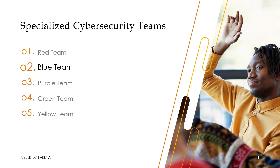The next thing we want to talk about is specialized cyber security teams. We have the red team, the blue team, the purple team, the green team, and the yellow team. The red team's role includes simulating attacks on an organization. Their objective is identifying vulnerabilities and weaknesses.